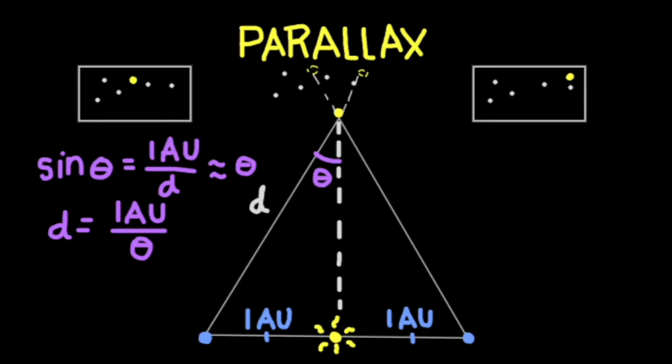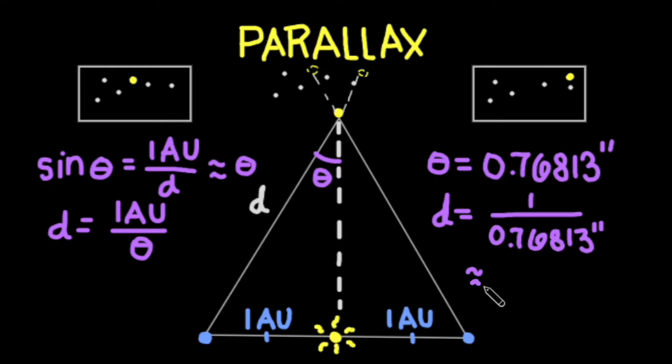Let's run through an example. The parallax angle to Proxima Centauri, the closest star to us besides the Sun, is 0.76813 arc seconds. If we divide 1 by that, we get a distance of about 1.302 parsecs.